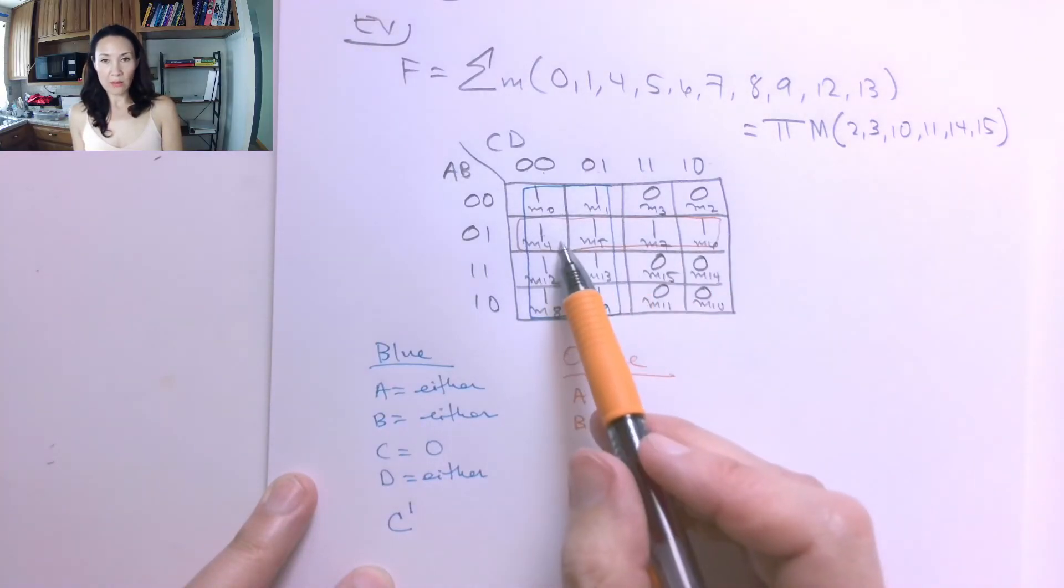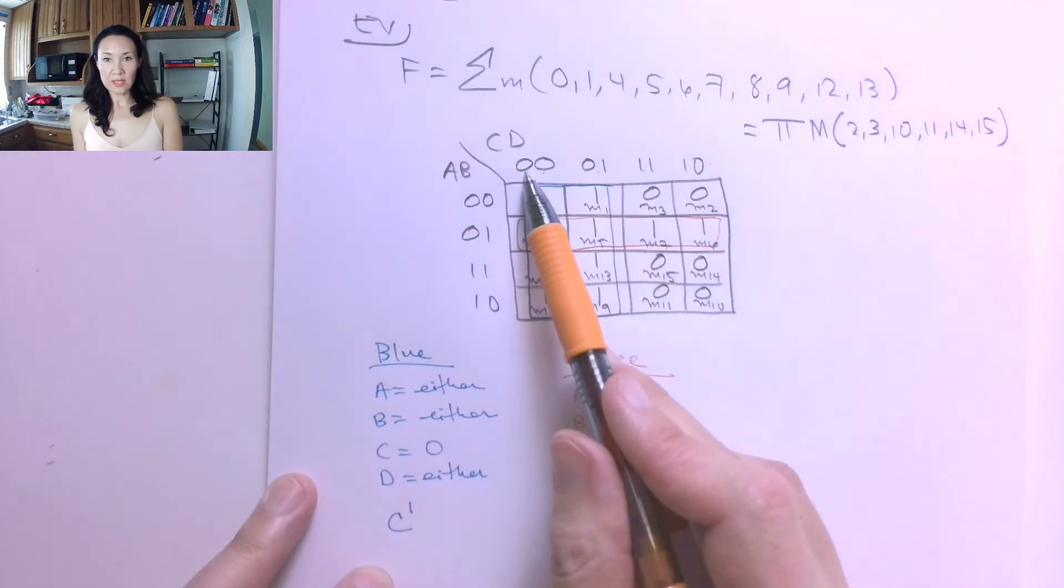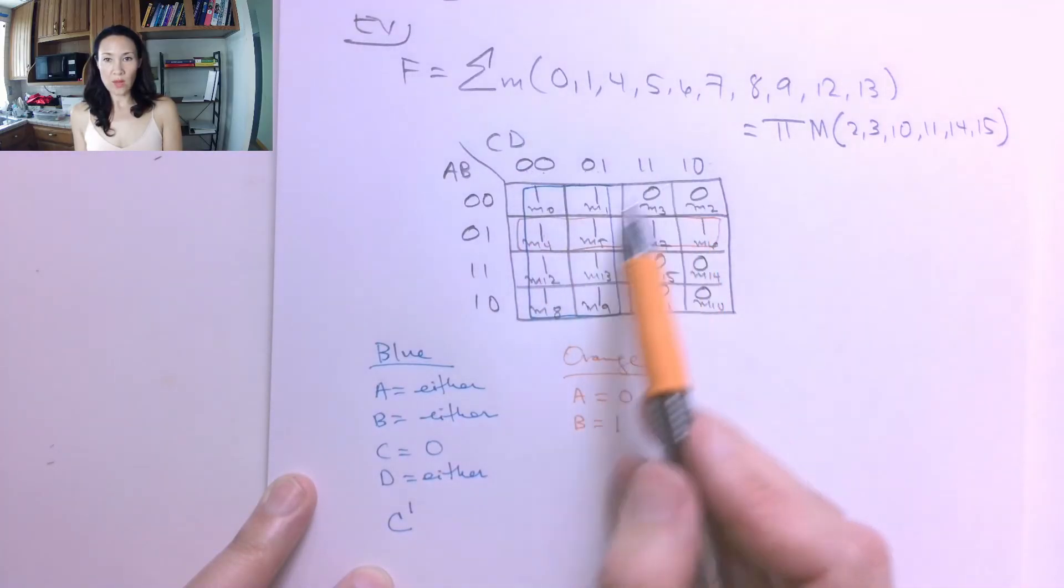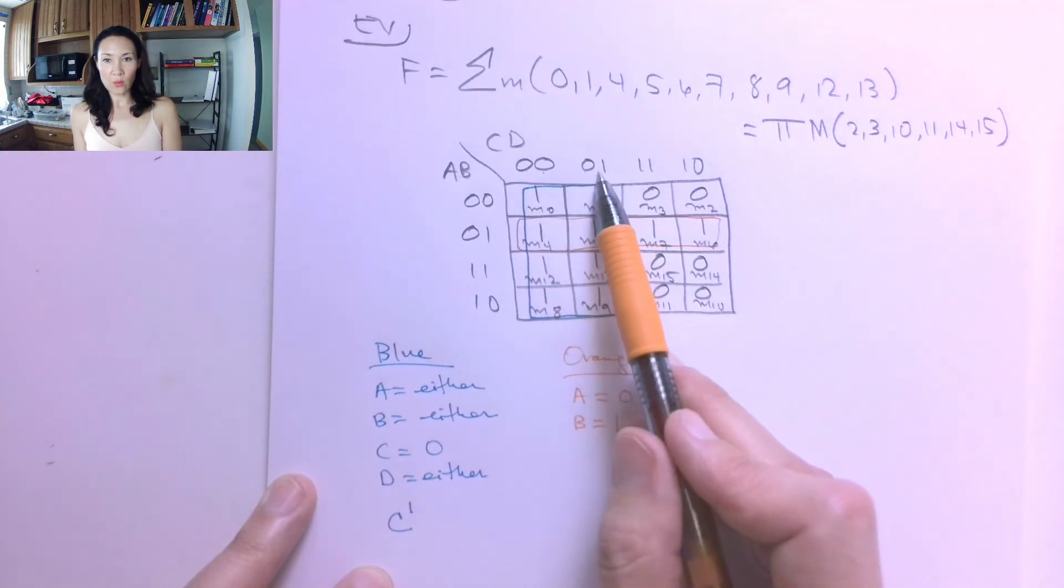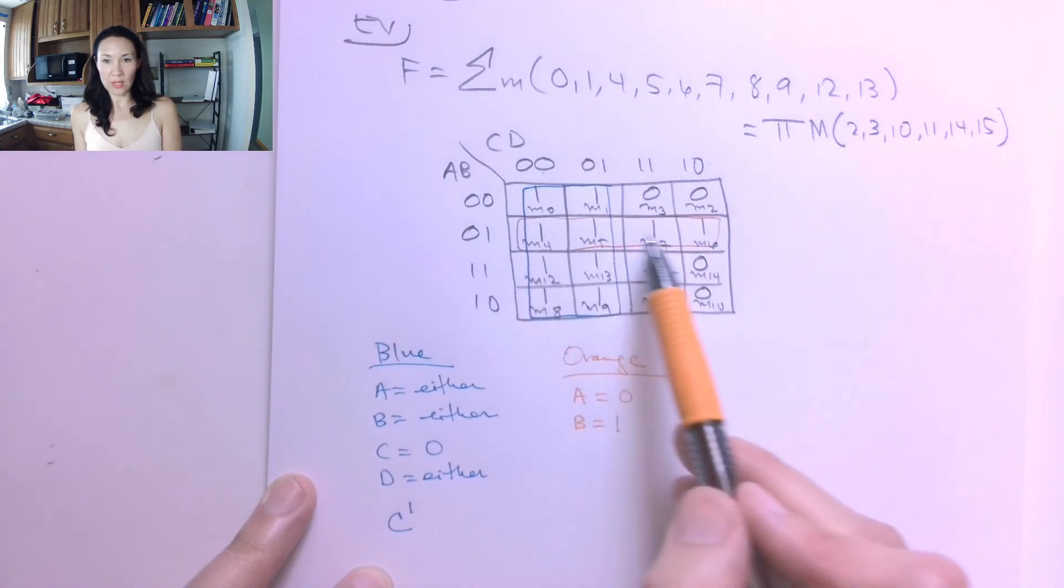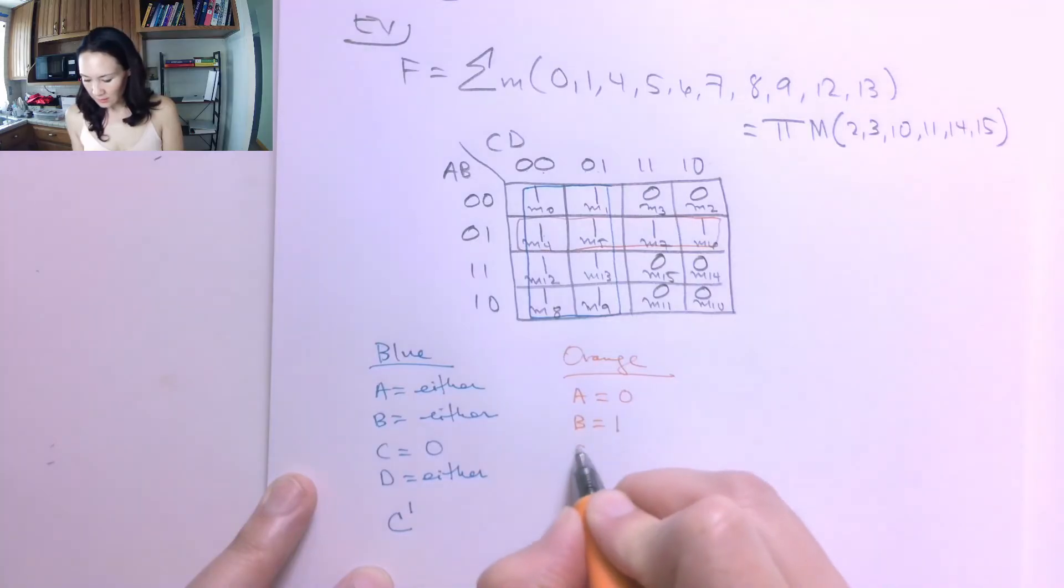And then C and D basically don't matter at all because if C is 0 or C is 1, we're going to have 1s in this orange group. And if D is 0, 1, 1, 0, it doesn't matter. We're going to have 1s in this orange group. So C and D are both either.